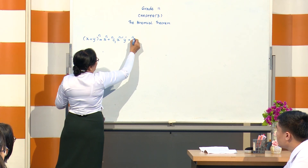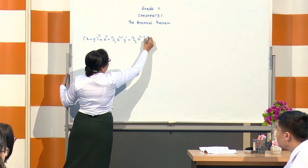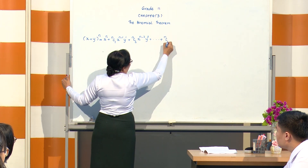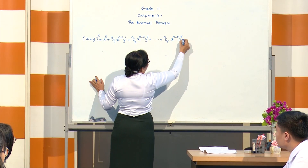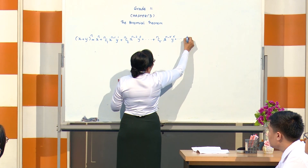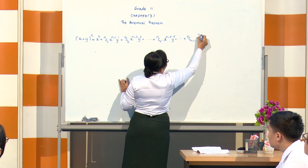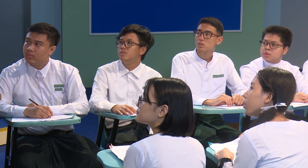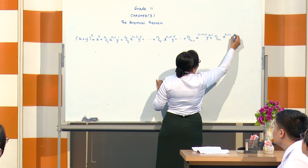Plus nC2 times x to the power n minus 2 times y to the power 2, plus ... plus nCr times x to the power n minus r times y to the power r, plus ... plus nC(n-1) times x to the power 1 times y to the power n minus 1, plus nCn times y to the power n.